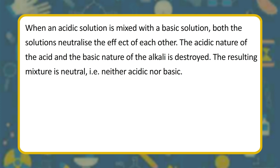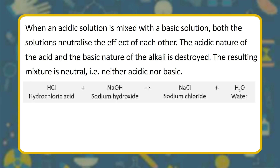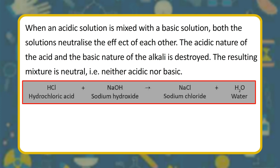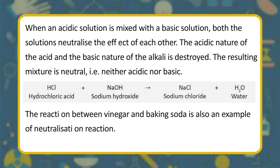When an acidic solution is mixed with a basic solution, both neutralize the effect of each other. The acidic nature of the acid and the basic nature of the alkali are destroyed. The resulting mixture is neutral — neither acidic nor basic. HCl + NaOH → NaCl + H₂O. The reaction between vinegar and baking soda is also an example of a neutralization reaction.